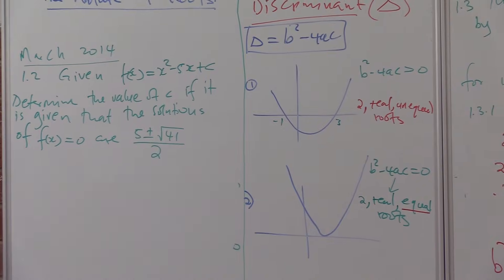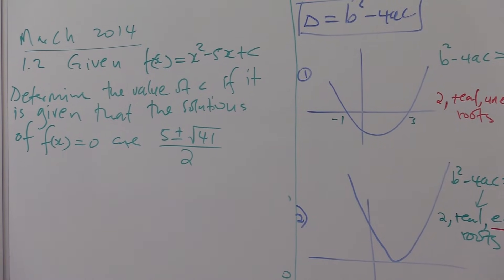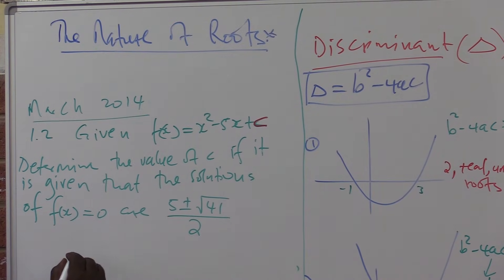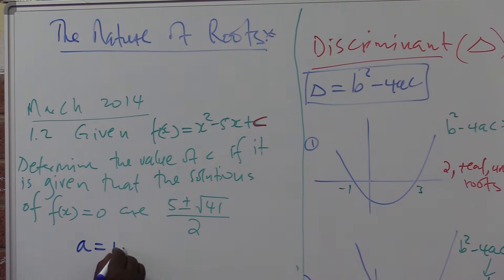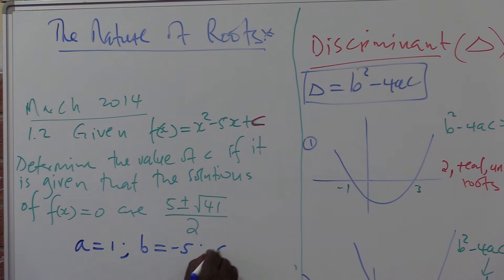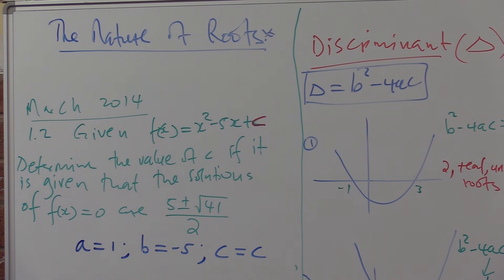I want us to look at the last problem. Given that f of x is equal to x squared minus 5x plus c, determine the value of c. We know that in this particular case, our a is equal to 1, our b is equal to minus 5, and our c is equal to c. We don't know the value of c. That's what we are looking for.